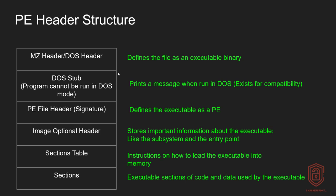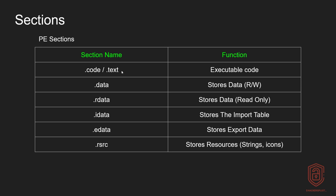The sections themselves are sections of code or data that are used by the executable. When talking about any portable executable — it really doesn't have to be a piece of malware — it's best to sort it out into two categories: you have your header, and then you have your sections. Your header contains details about the executable; the sections themselves contain the data and the code for the executable. If you sort it into these two categories, it becomes a whole lot easier to understand what's going on.